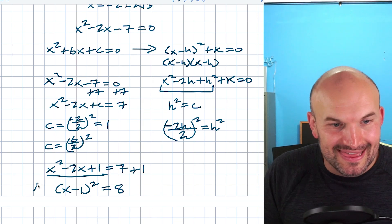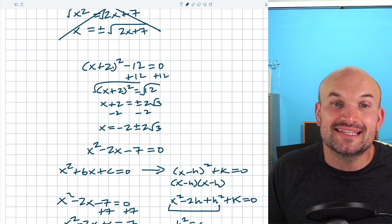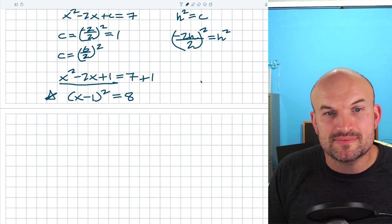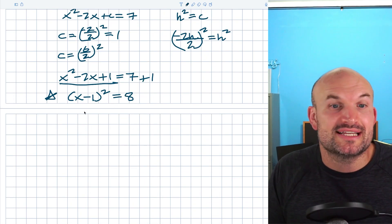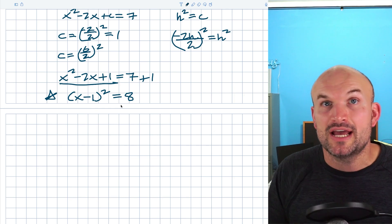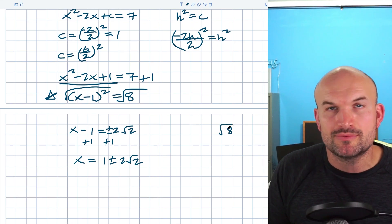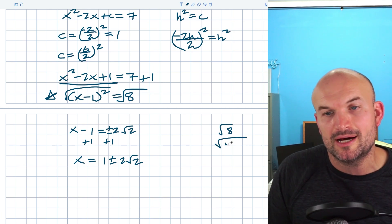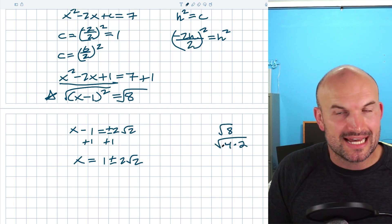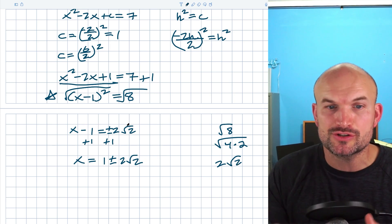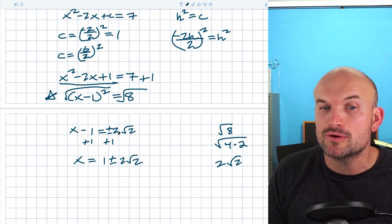Now this is in exactly the same form as last video, which was very easy to solve using inverse operations. To solve, I simply take the square root of both sides and then add 1. Remember when taking square roots to include the plus or minus, and I can simplify the square root of 8 as the square root of 4 times 2, which gives 2 root 2.